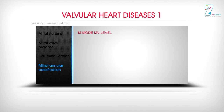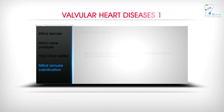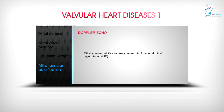The architecture of the PML is distorted and the leaflet is rendered immobile. M Mode MV Level: There is a thick dense band of echoes behind the leaflets reflected from the calcified annulus. Doppler Echo: Mitral annular calcification may cause mild functional mitral regurgitation (MR).